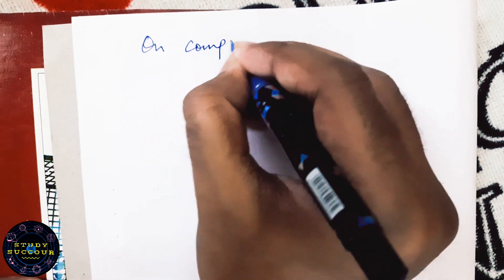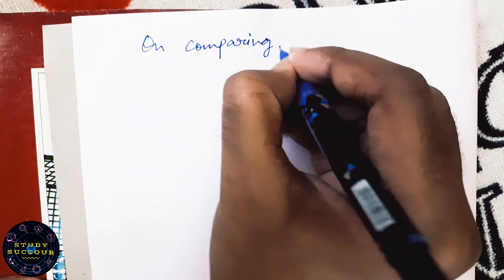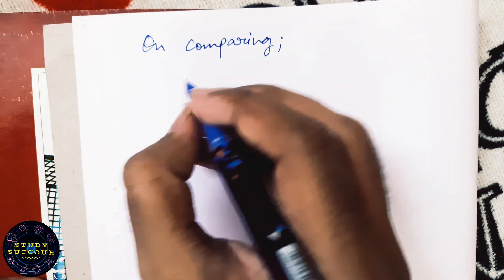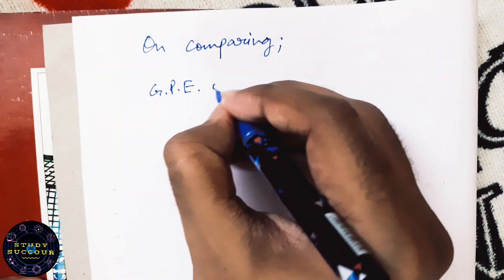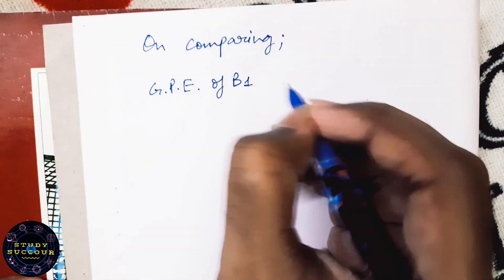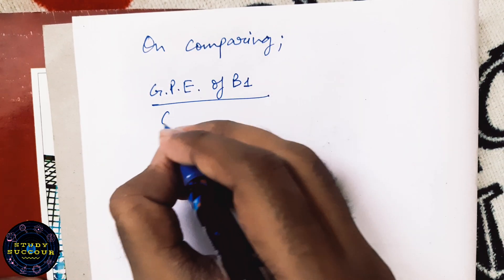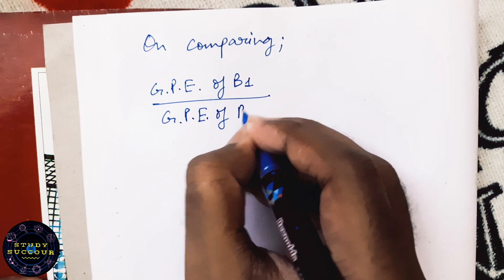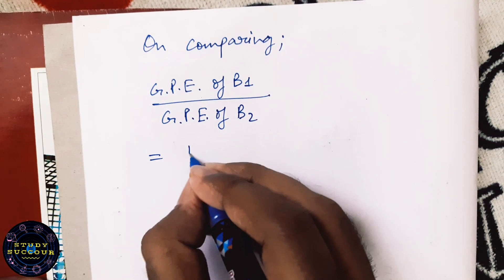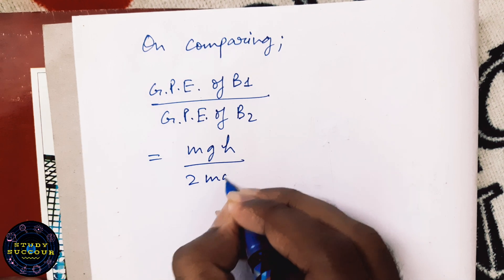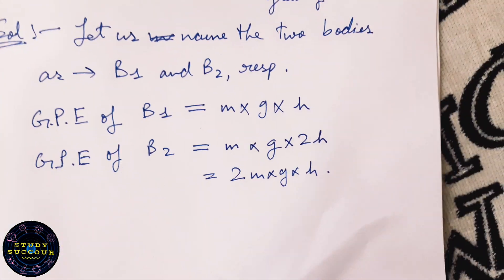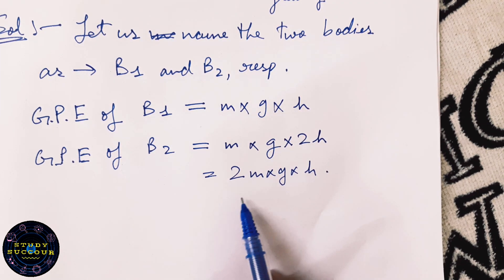Now, on comparing. We will first take the gravitational potential energy of B1 in the numerator and in the denominator we will take the GPE of B2 which were MGH and 2MGH. Just have a look, MGH and 2MGH.